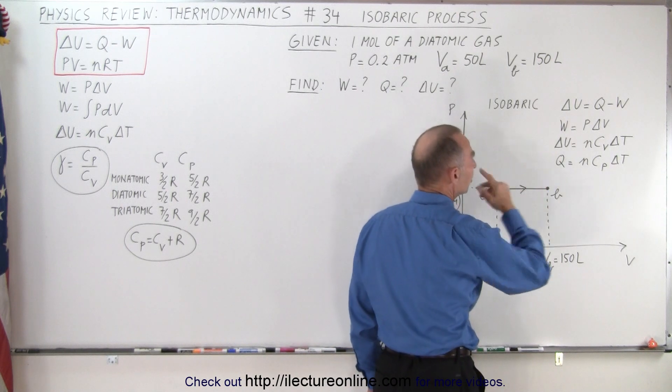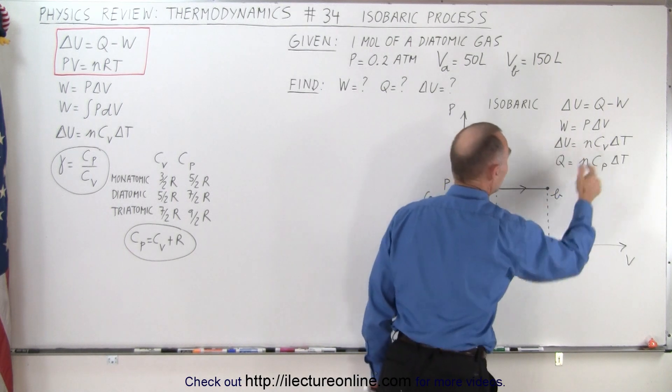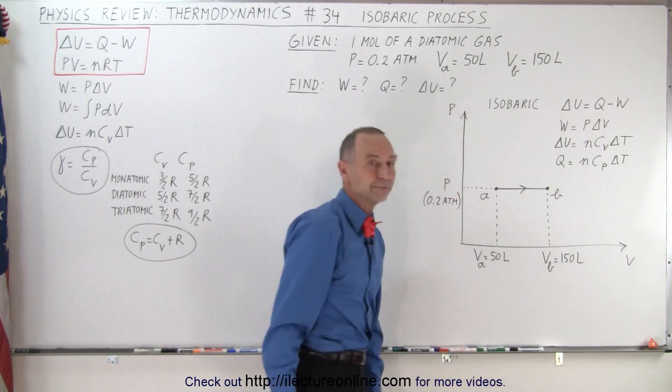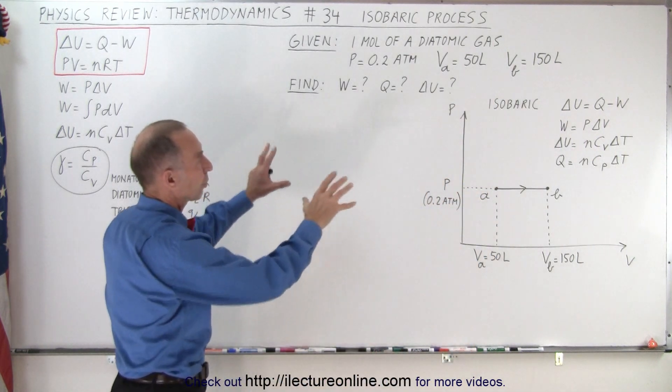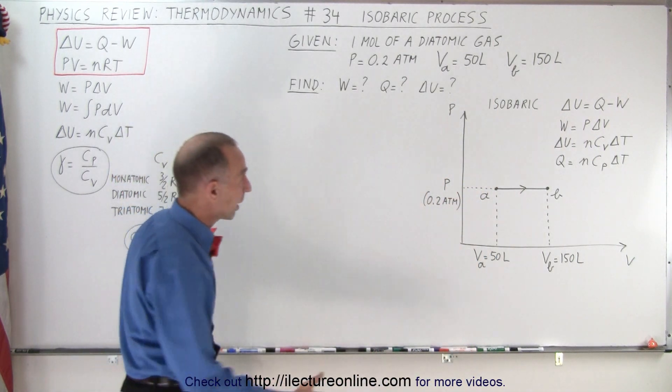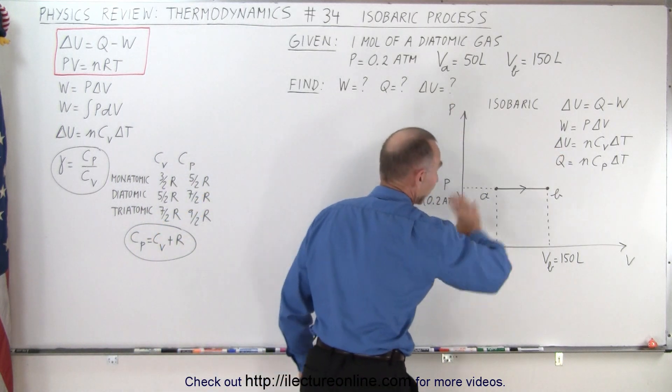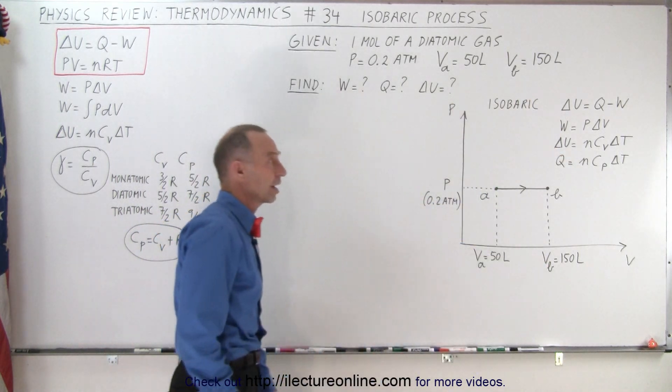But to find out what delta U is and Q, that's a little bit more difficult because we need to know the change of the temperature, which is not given. At least that's where we should start. Regardless of the problem, we should be able to just simply write the equations down as they are.